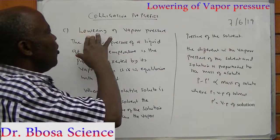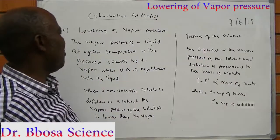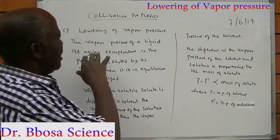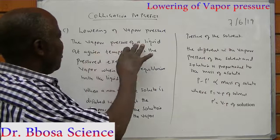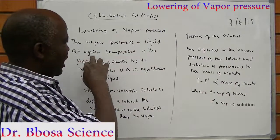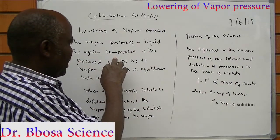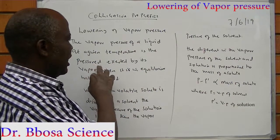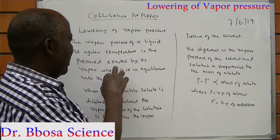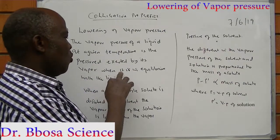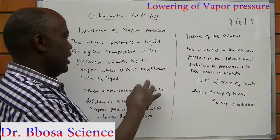We will look at lowering of vapor pressure. The vapor pressure of a liquid at a given temperature is the pressure exerted by its vapor when it is in equilibrium with a liquid.